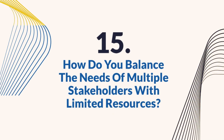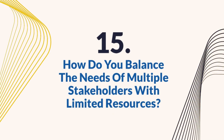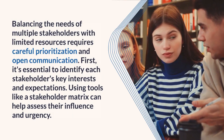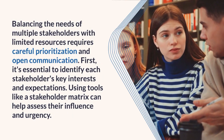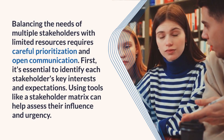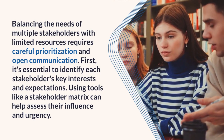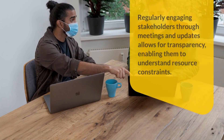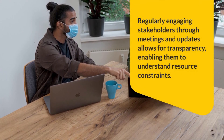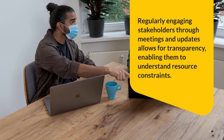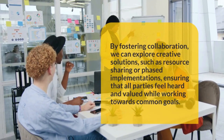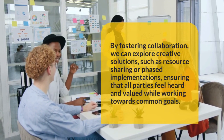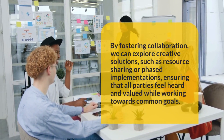Question 15: How do you balance the needs of multiple stakeholders with limited resources? Balancing the needs of multiple stakeholders with limited resources requires careful prioritization and open communication. First, it's essential to identify each stakeholder's key interests and expectations. Using tools like a stakeholder matrix can help assess their influence and urgency. Regularly engaging stakeholders through meetings and updates allows for transparency, enabling them to understand resource constraints. By fostering collaboration, we can explore creative solutions, such as resource sharing or phased implementations, ensuring that all parties feel heard and valued while working towards common goals.